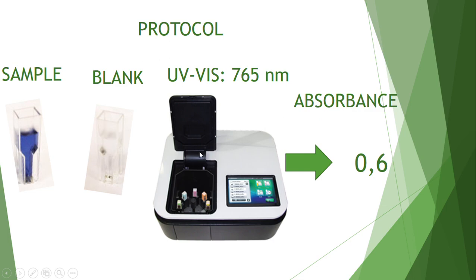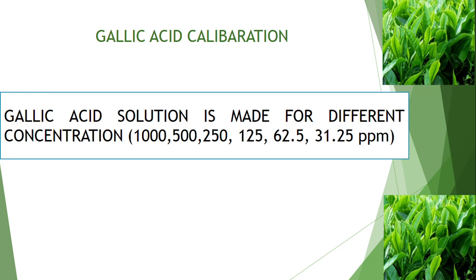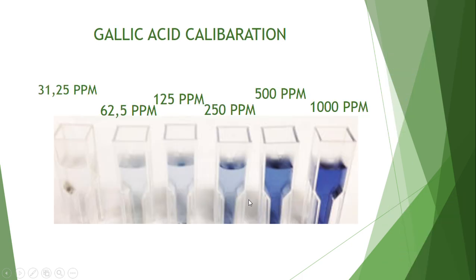Here is the result: the absorbance of the sample is 0.6. We then need to make a calibration curve. In this case, I use gallic acid calibration. Gallic acid solutions are made at different concentrations: 1500, 500, 250, 125, 62.5, and the lowest concentration is 31.25 ppm. These are measured using the same procedure as the total phenolic content measurement. Here are the results of the gallic acid calibration.